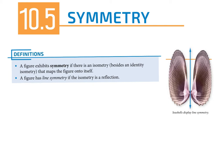Hopefully we're all familiar with the term symmetric. If something is symmetrical, you should be able to see some type of similarity on one side or the other. There are actually multiple types of symmetry. The one you're most familiar with is the first one we're going to talk about, which is line symmetry.